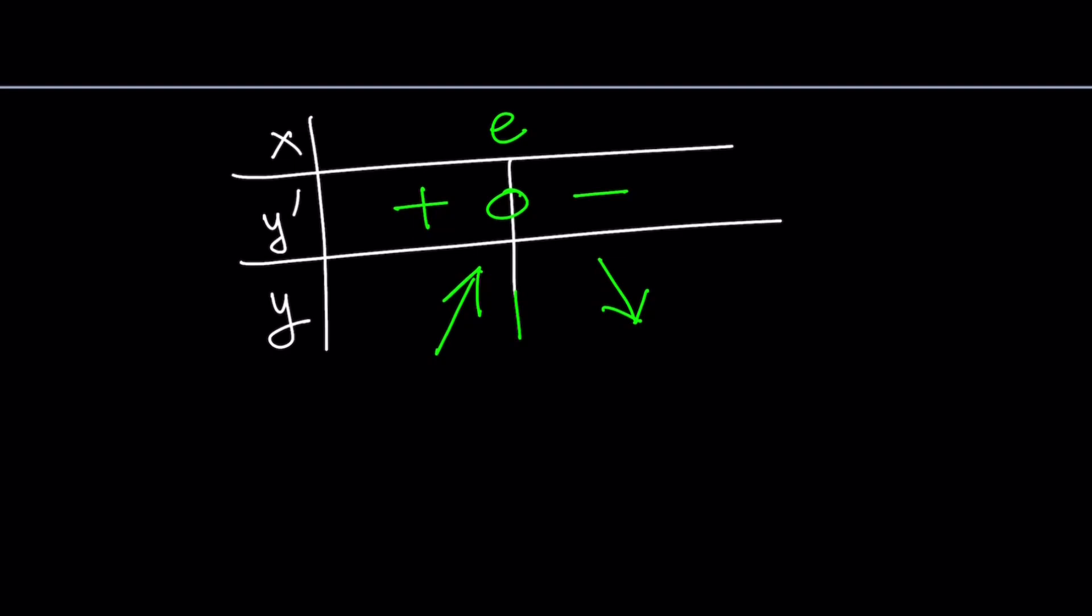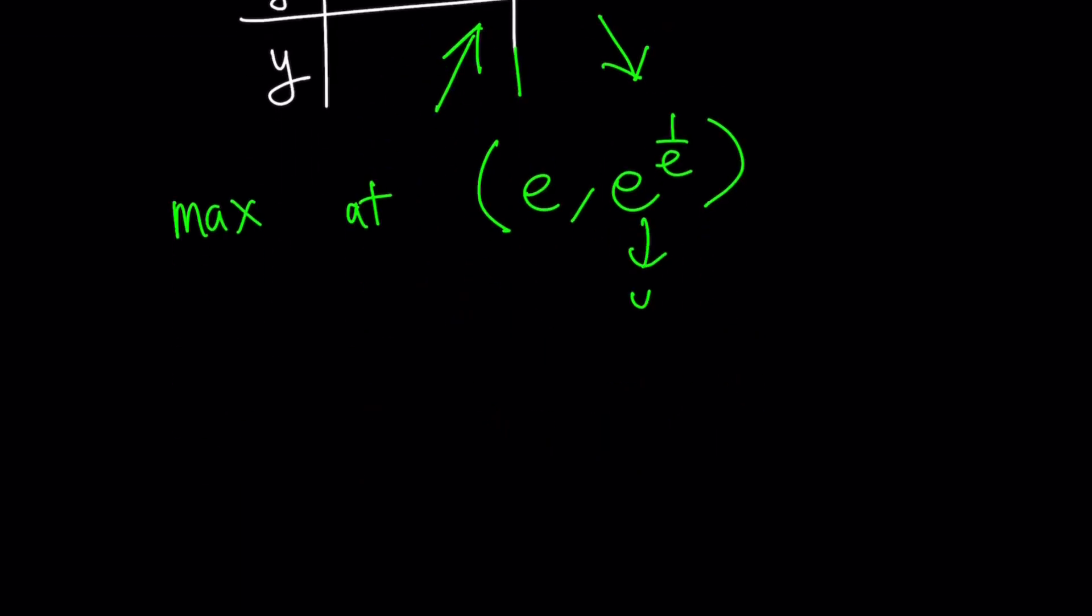This is cool because first derivative tells us whether the function is increasing or decreasing on an interval. Our function is increasing first and then decreasing. That means it's going to have a max at x equals e. But x equals e implies that y is e to the power 1 over e. So this is the y value. And guess what? This is the maximum y value you can get.